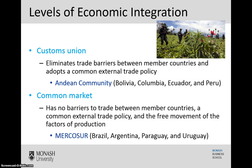The next level up of economic integration is a customs union. This is where we eliminate the trade barriers, like in a free trade area, but also now adopt a common external trade policy. So it's the next level up, adding that external trade policy shared amongst all member countries on top of the removal of trade barriers. An example here is the Andean Community, located in South America, comprising Bolivia, Colombia, Ecuador, and Peru.